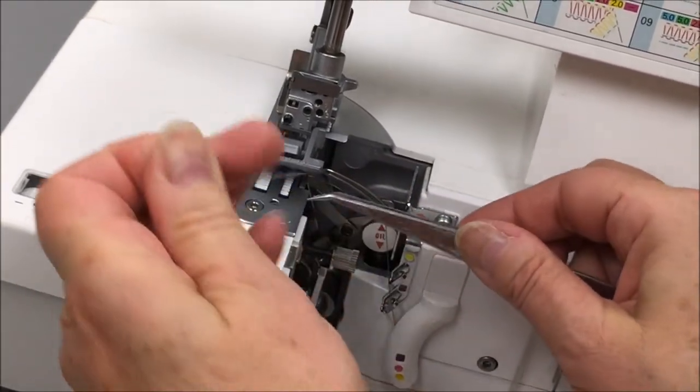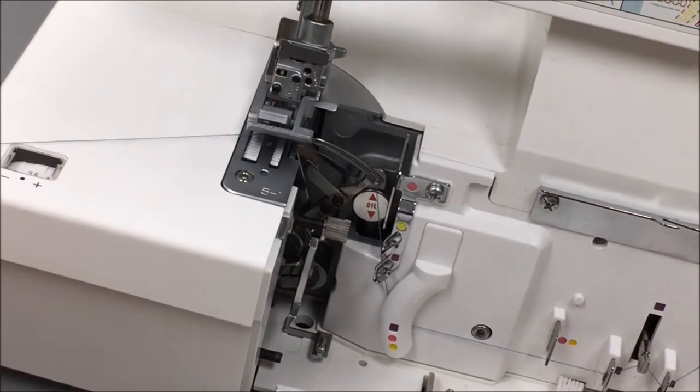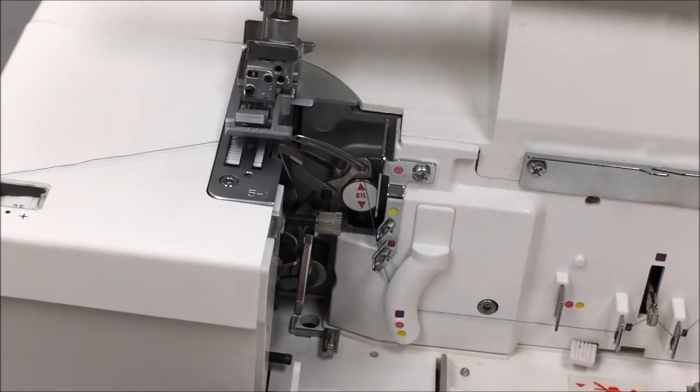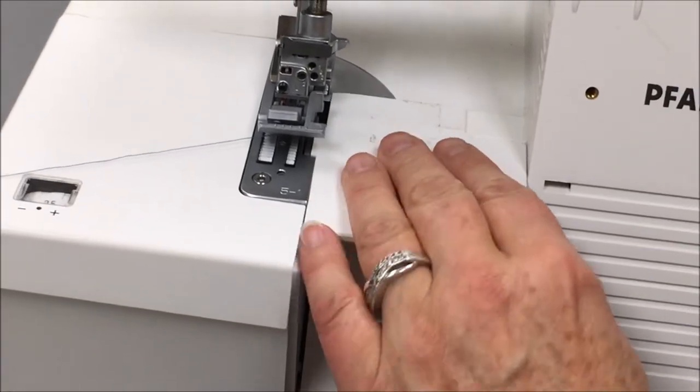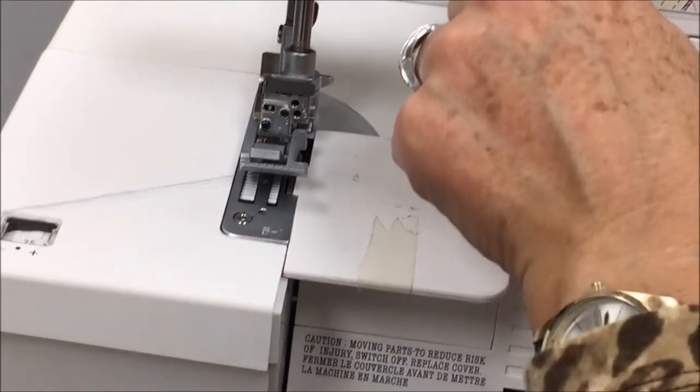Four inch thread tail. Just put it right there to the side for now. That's finished. We can go ahead and close our door. You want to make sure that power table is flat. Now we'll do the left needle. It's already up here in the thread guide.